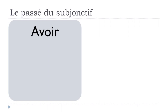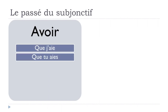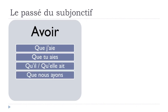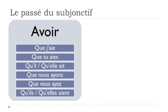Avoir at the subjonctif présent goes: que j'aie, que tu aies, qu'il ait, qu'elle ait, que nous ayons, que vous ayez, qu'ils aient, qu'elles aient. Let's remember them: que j'aie, que tu aies, qu'il ait, qu'elle ait, que nous ayons, que vous ayez, qu'ils aient, qu'elles aient.